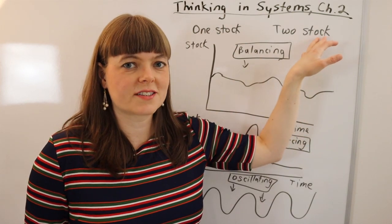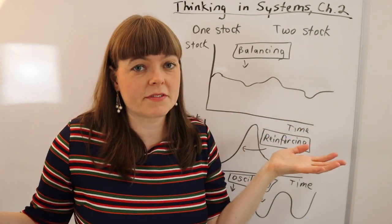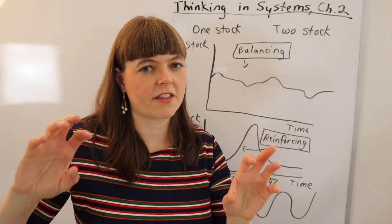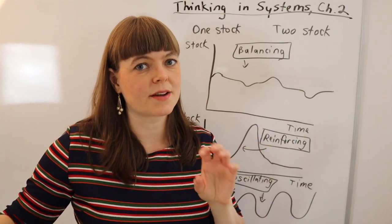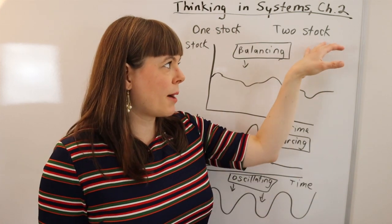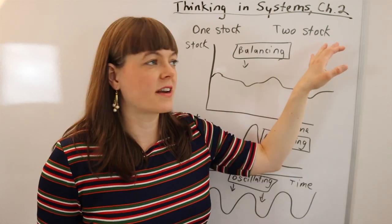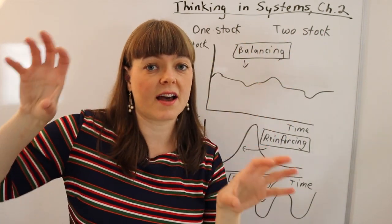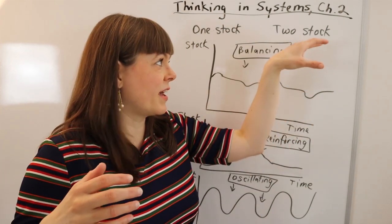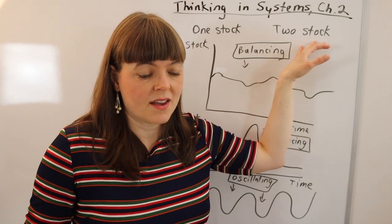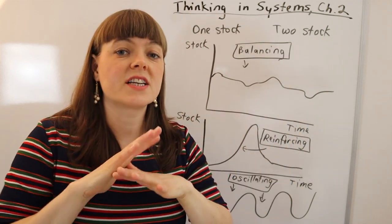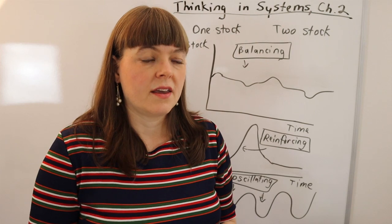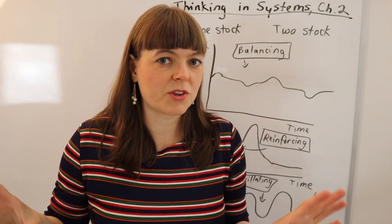And then a two stock system may be the same type of system as one of the one stocks, it's just where you've added another type of stock that you're looking at in tandem with the first type. So if you had population as the stock you're looking at, population plus food supply as two separate stocks that have an interaction between them that could be a two stock system. So the one stock versus two stock is actually not about an inherent property of the system, it's more about what are you looking at when you analyze a system.